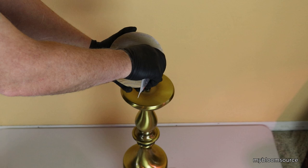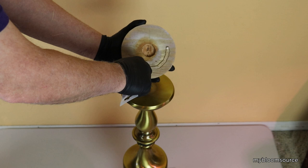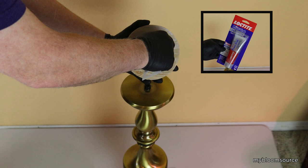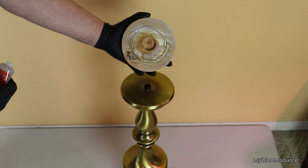We used Loctite PowerGrab Ultimate Crystal Clear. We chose the crystal clear because later we would be using it on our clear dish and we did not want the adhesive to show through.